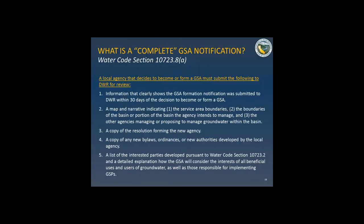What is a complete GSA notification? In the interest of time, I won't go through this entirely. But if you submit everything listed in Water Code 10723.8, it's going to be a complete notification. The department sent out a six-page guideline a few weeks ago that goes step-by-step through the process. If you follow this process, you'll have a complete notification. You need to inform DWR within 30 days, provide a map and narrative showing all required areas, and submit a resolution forming the new agency, along with a copy of any legal agreement.